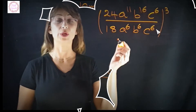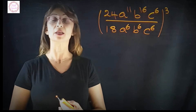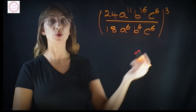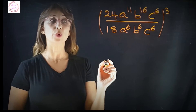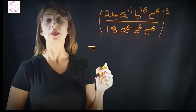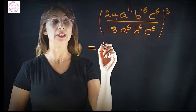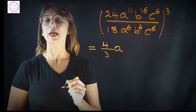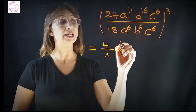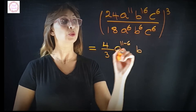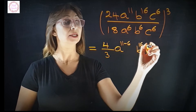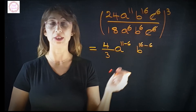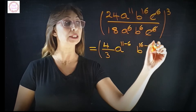Now look at this example — it has many variables a, b, c and looks complicated, but it's not if you simplify inside the bracket before distributing the power of 3. First, 24 and 18 share a highest common factor of 6: 24 divided by 6 is 4, and 18 divided by 6 is 3. For a: subtract exponents 11 minus 6. For b: 16 minus 6. For c: c power 6 over c power 6 cancels to 1. All of this is inside the bracket raised to the power of 3.